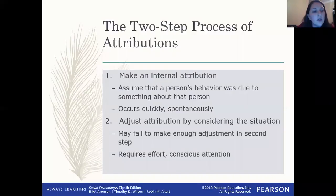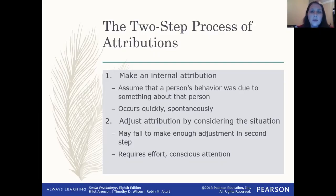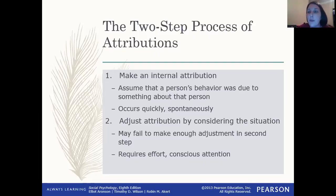One major issue when it comes to social perception is making attributions — figuring out what causes people to behave a certain way. We usually engage in at least the first step, and it only takes a conscious effort for us to slow down to get to the second step. When we first view people, we tend to look directly at them and make an internal attribution. We assume that whatever reason the person behaved the way they did was because that's who that person is — a particular trait that person has.